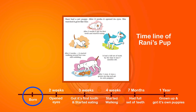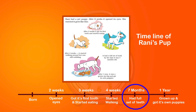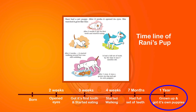Let us mark these on a timeline: the puppy is born, then after two weeks it opened its eyes, after three weeks it got its first tooth and started eating, after four weeks it started walking, after seven months it had a full set of teeth, and after one year it was a grown-up dog and got its own puppies. Could you also complete the timeline?